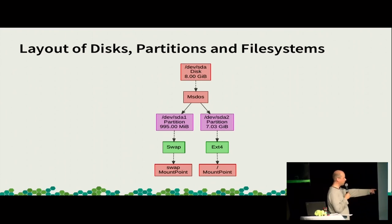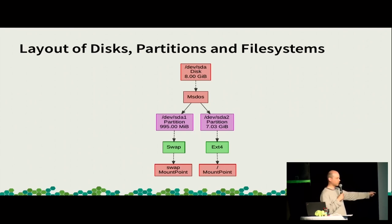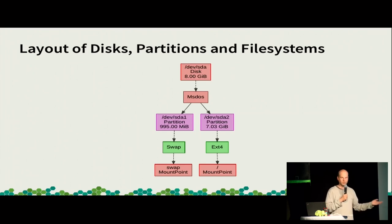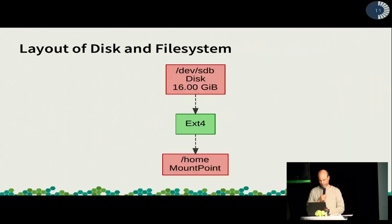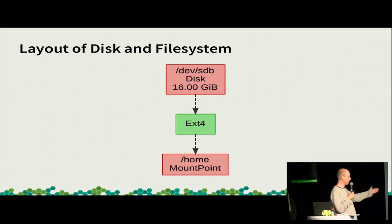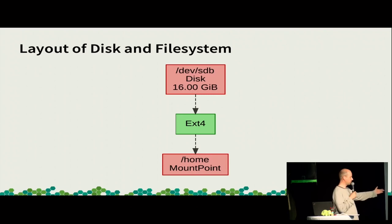Here we have a disk, and we have an extra object for a partition table — MS-DOS in this case — two partitions, a file system, swap, and a mount point. As you see, the file system is a separate object, so we can connect it to any block device, whether it's a disk, a logical volume, a LUKS encrypted device, or a RAID — it's always the same. The simplest use case: you have a disk, a file system, and a mount point, and the file system class is exactly the same as in the previous example.